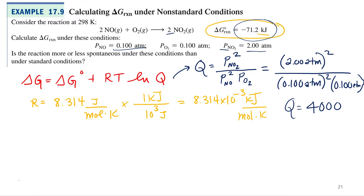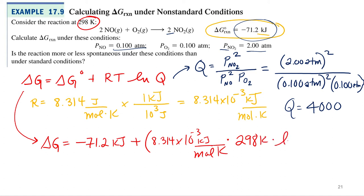Alright, so now I can finally go back in and calculate my delta G under non-standard state conditions. So I've got delta G standard state negative 71.2 kilojoules plus the ideal gas constant, which I just converted to kilojoules per mole Kelvin times temperature. What's my temperature? 298. Times the natural log of 4,000. And we get negative 50.7.